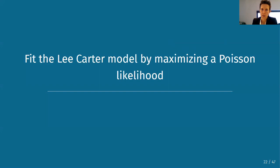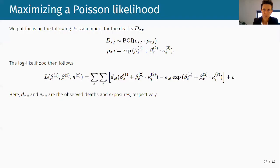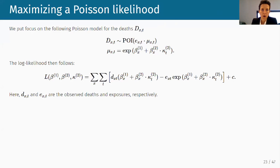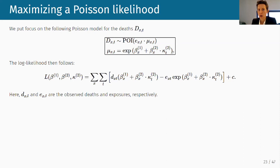For the Poisson approach, we write the Poisson likelihood for the number of deaths D_{x,t}, using as the mean the exposure to risk E_{x,t} multiplied by the force of mortality mu_{x,t}, with the Lee-Carter specification for mu. Writing down the log-likelihood — as in the lecture sheets — gives the expression we want to maximize.